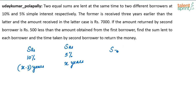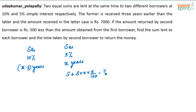He has to return the principal plus the interest incurred on the principal. That is S plus S times X times 5 divided by 100. This amount is nothing but 7000, because it is given that from the second person, I am getting 7000 rupees as the total amount. So the principal plus the interest equals 7000.